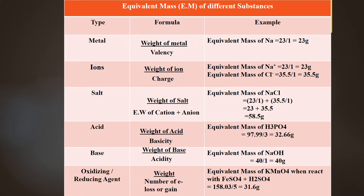Let's discuss in detail how we can find equivalent mass of acid. For finding equivalent mass of acid, find its molecular weight, then divide the molecular weight with basicity. Always remember, basicity is the number of replaceable hydrogen ions.